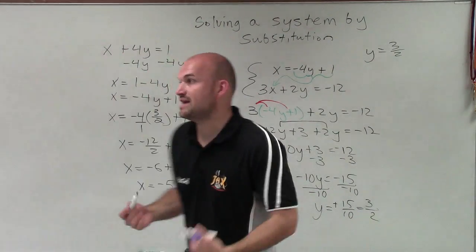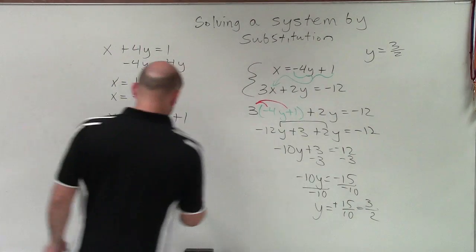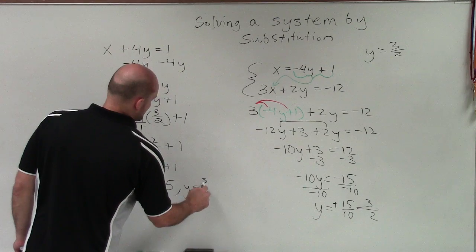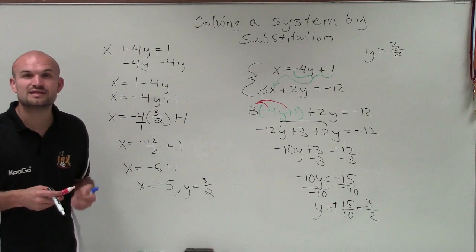Therefore, the values that make this system true are x equals negative 5 and y equals 3 halves. So there you go, ladies and gentlemen. That's how you solve a system using substitution. Thanks.